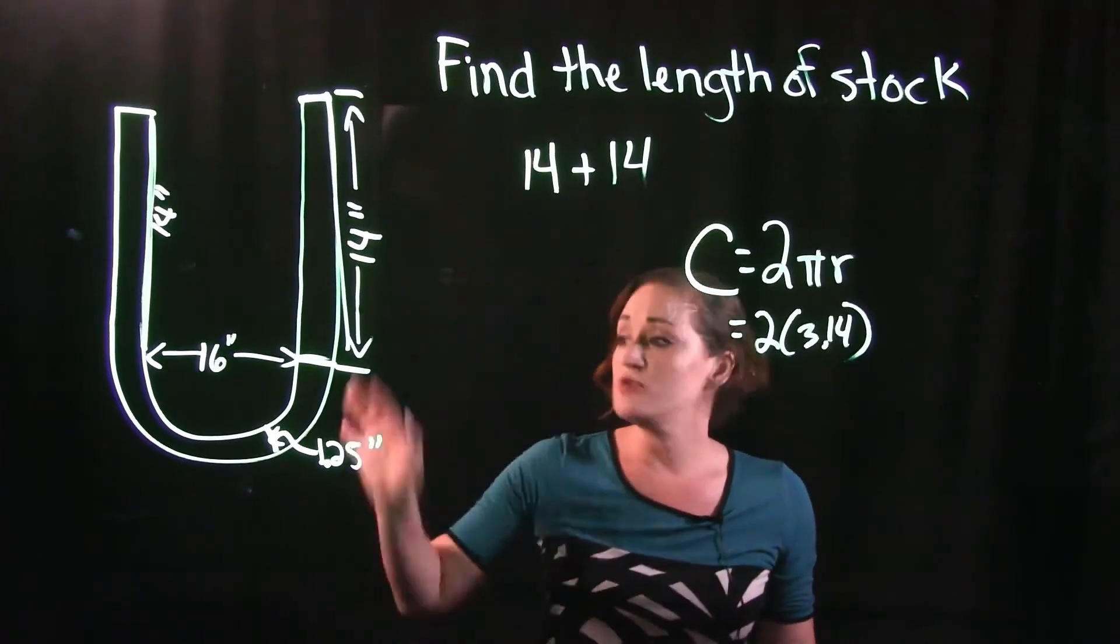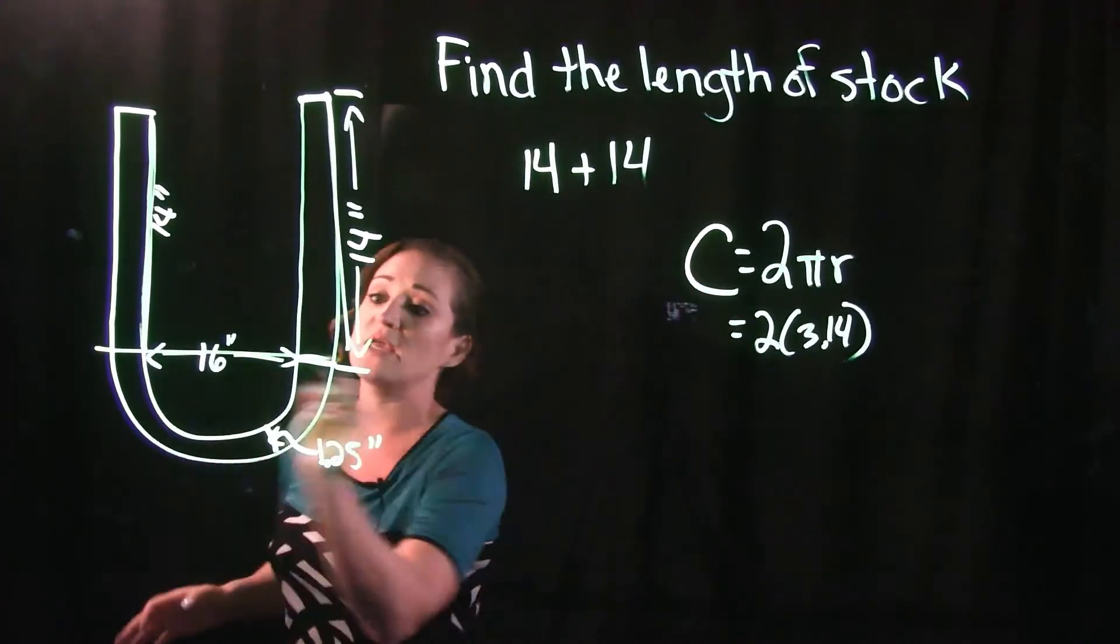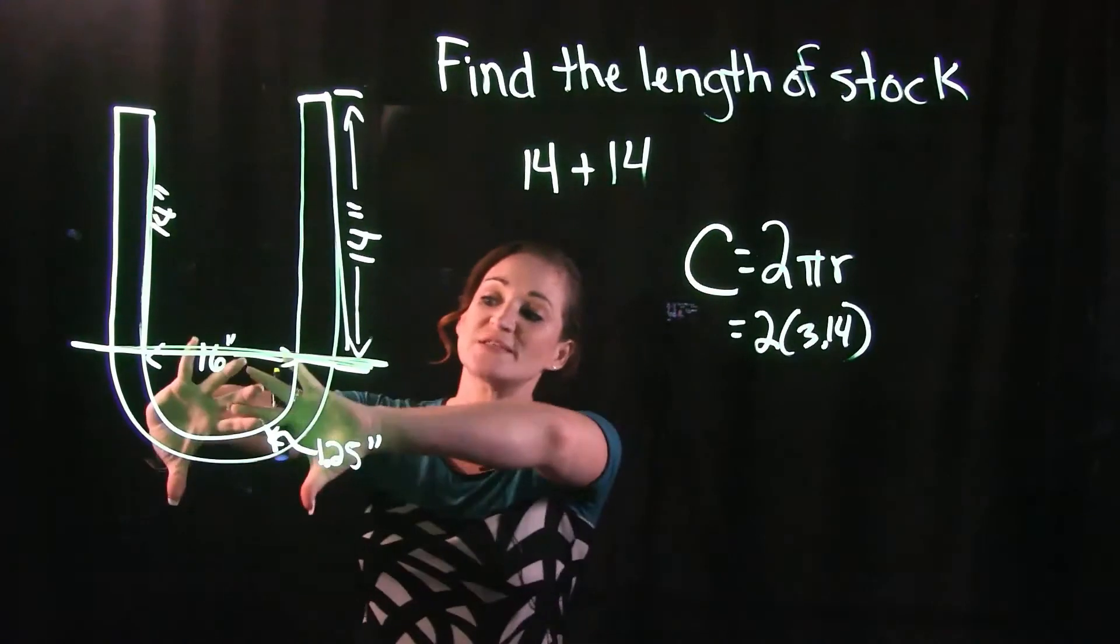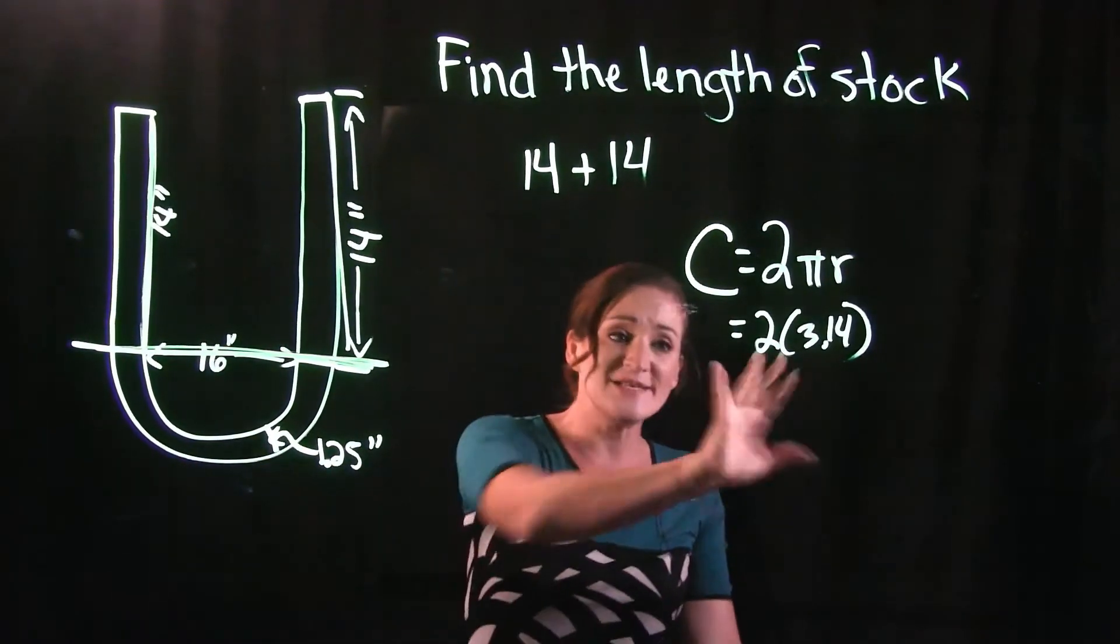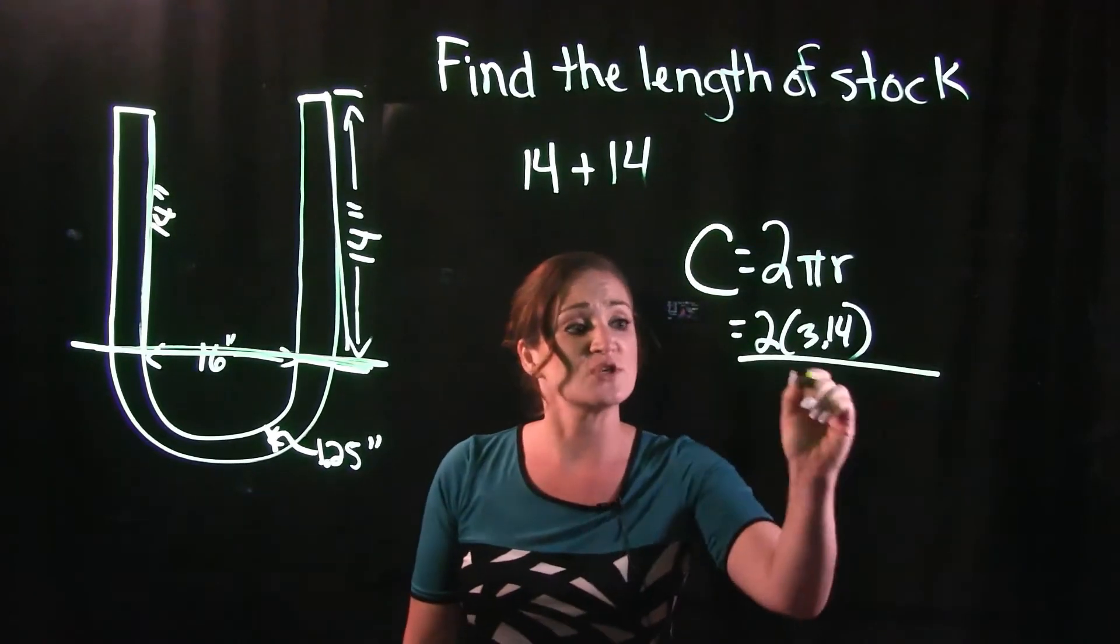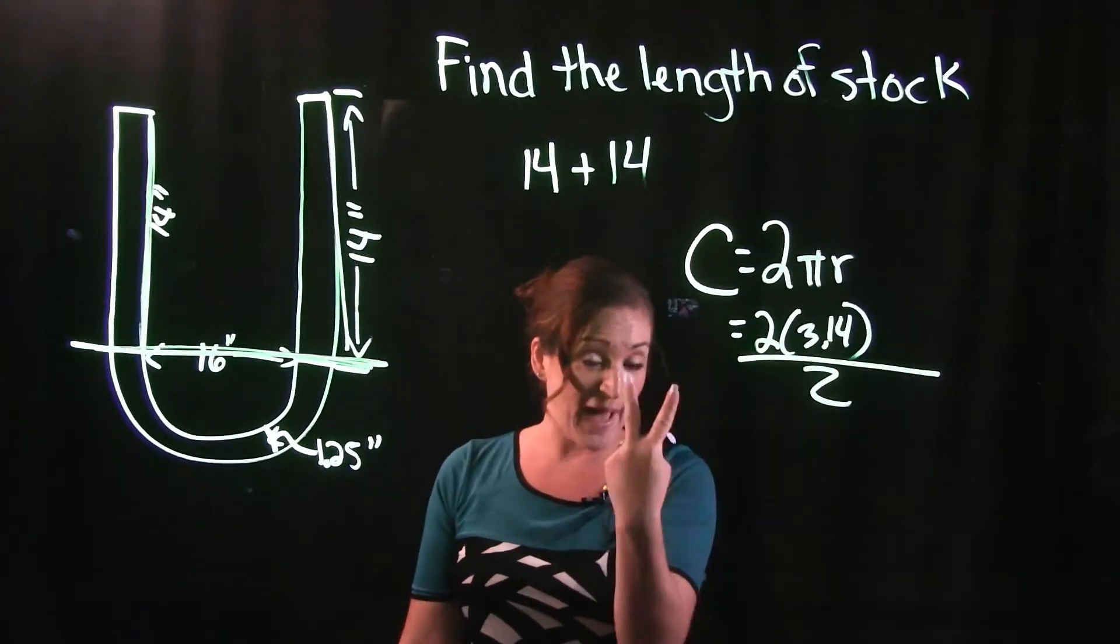We do not have an entire circle here. If we're just looking at this piece here, this is half of a circle. So we are going to have to divide this answer or this formula here by 2 because we only have half of a circle.